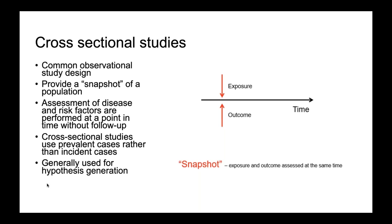Cross-sectional studies are a common observational study design that provides a snapshot of a population. The assessment of disease and risk factor are performed at a point in time without follow-up. Cross-sectional studies use prevalent cases rather than incident cases, because you're trying to see the prevalence of what's going on at that moment in time, and are generally used for hypothesis generation. You can't tell what was going on before or after — it is just: on May 16th at 2:16 p.m., X amount of people were on the call.